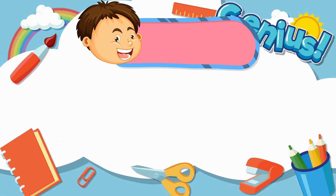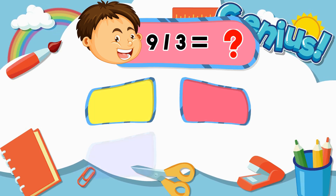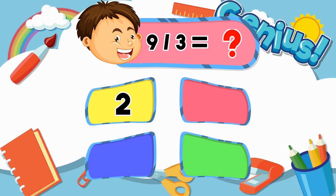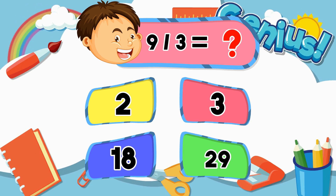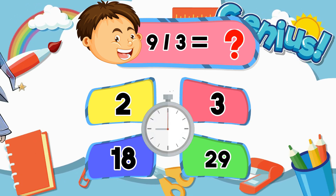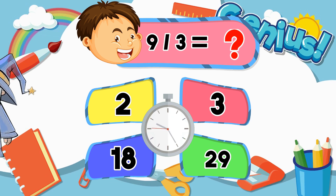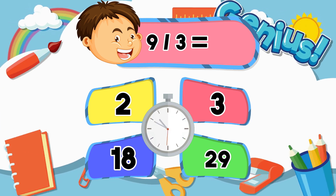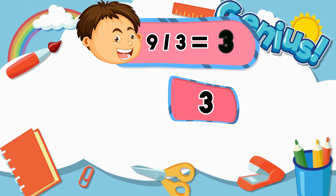What is 9 divided by 3? 2, 3, 18, 29. 3.